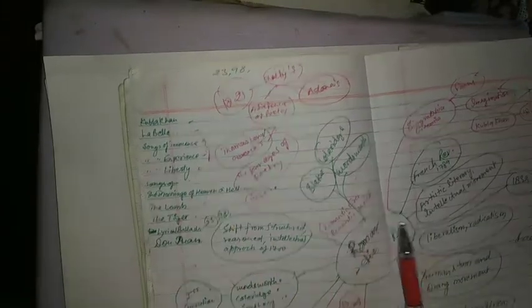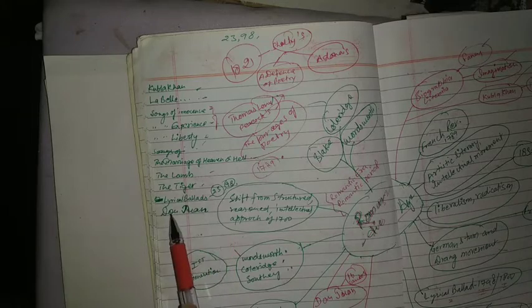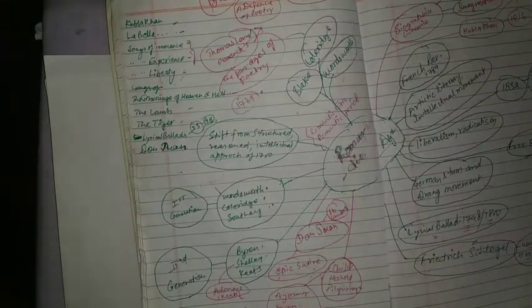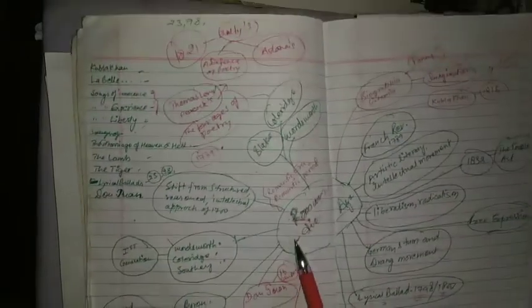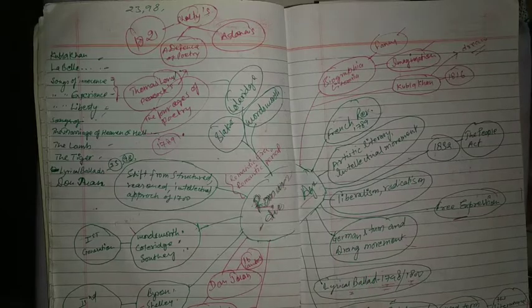Here, Songs of Liberty, The Marriage of Heaven and Hell, The Lamb, The Tyger, Lyrical Ballads, Don Juan, The Vision of Judgment, and The Curse of Kehama. So this is the presentation about romanticism. Hopefully you liked the video.